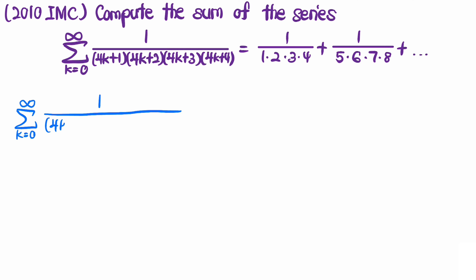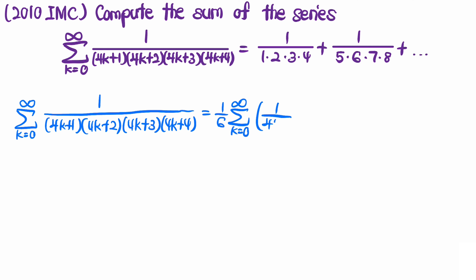When we are dealing with this kind of sum, we generally don't want the denominator to be products of all these terms — we want to separate them. So we shall do partial decomposition of fractions. After you are done with partial fractions, we'll end up with the expression where we can write the whole sum as 1/6 times the summation from 0 to infinity of: 1/(4k+1) minus 3/(4k+2) plus 3/(4k+3) minus 1/(4k+4).